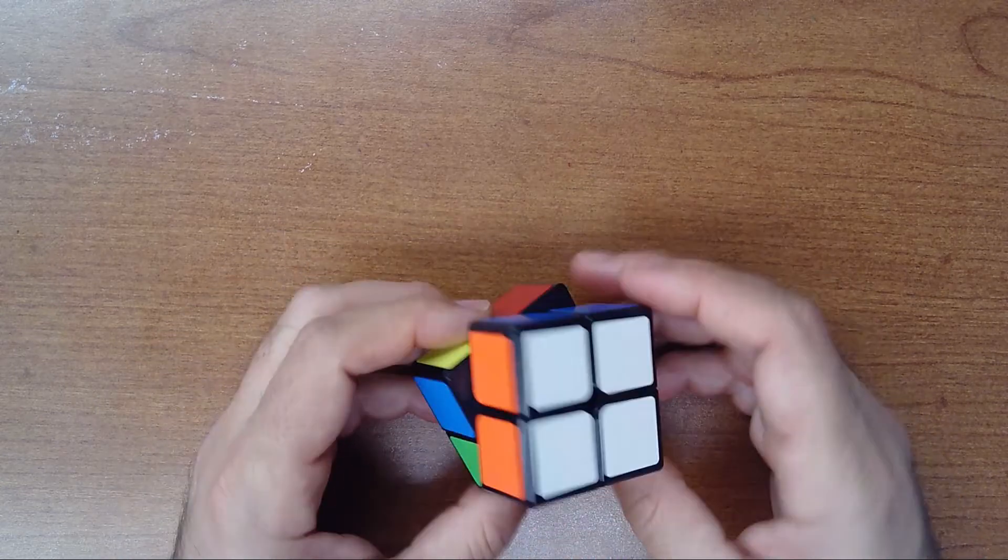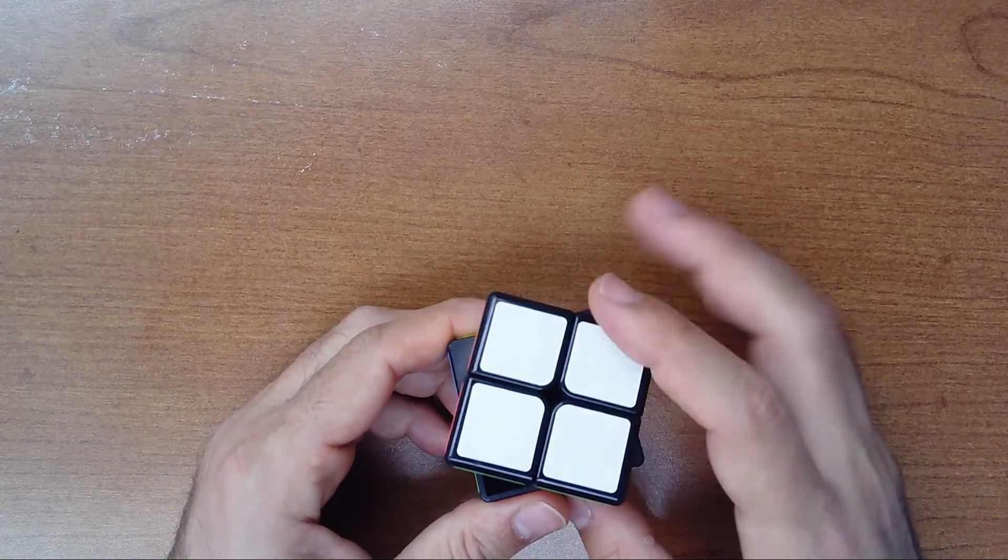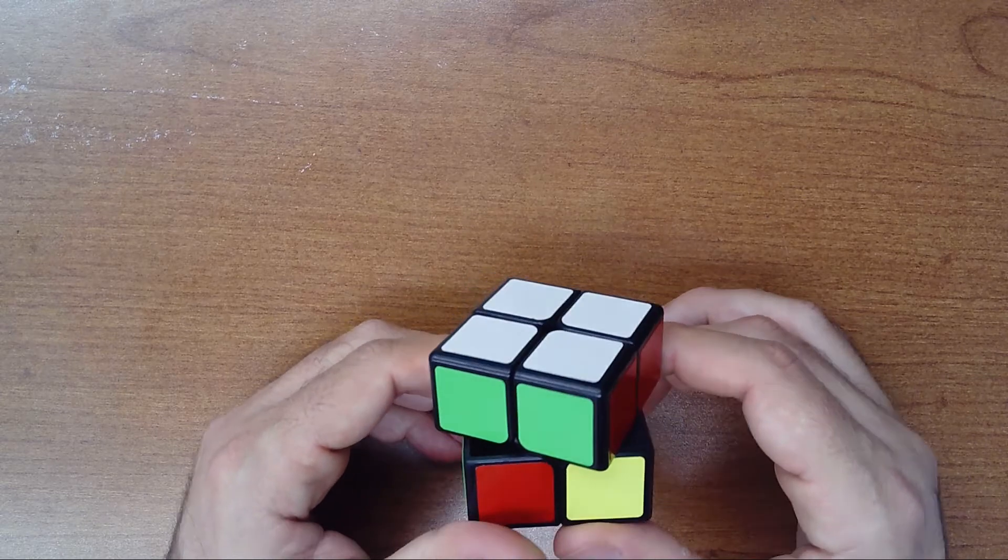Okay, good. I have the top white and then I have the first ring. You see: green, red, blue, and orange.